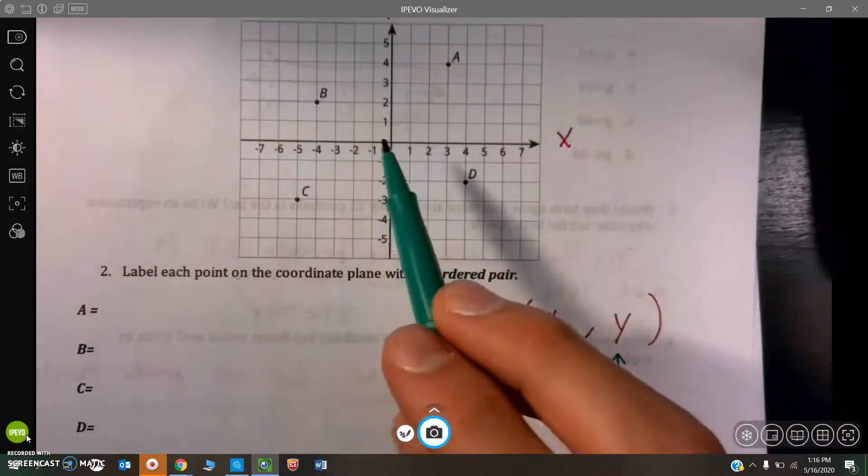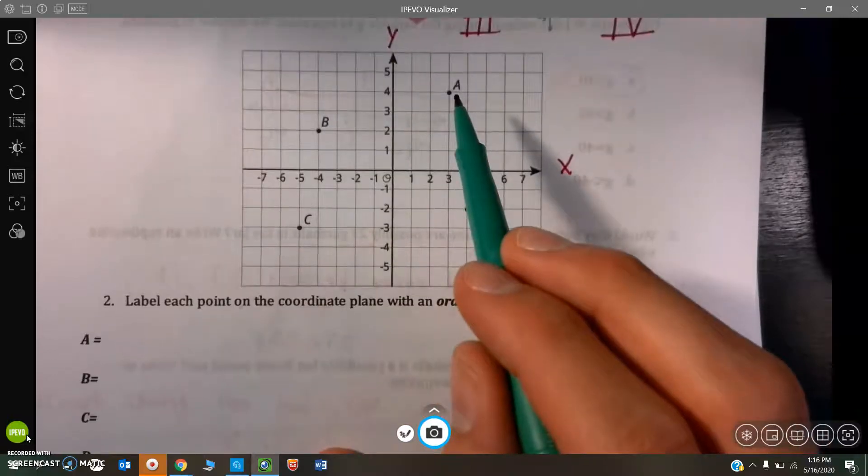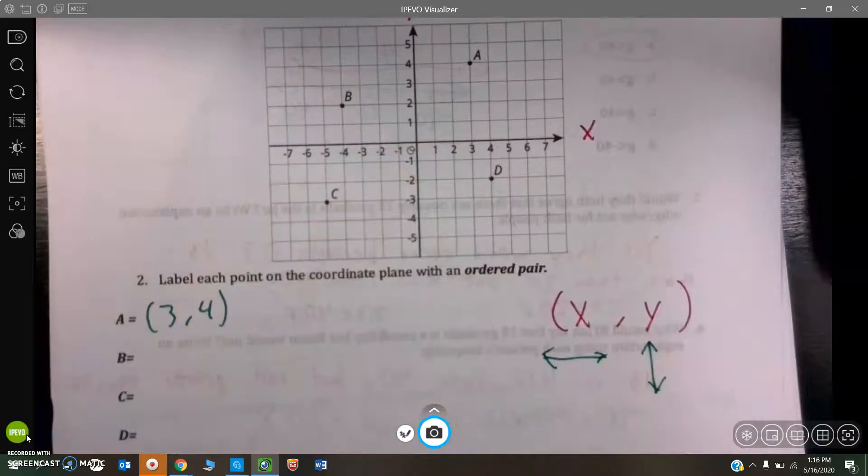For A, for instance, it is over three on the X and up four on the Y. So, its coordinate is three, four.